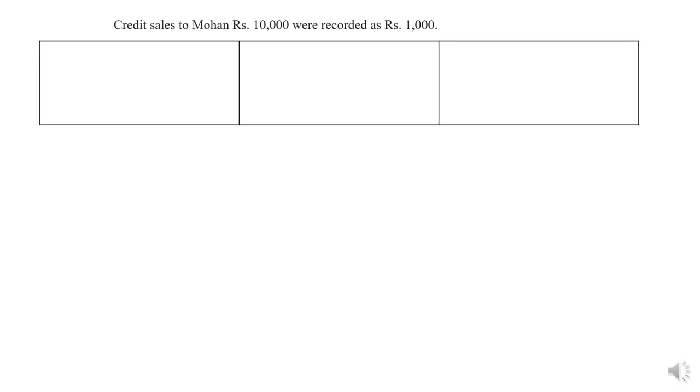I have not taken full problems. Instead, I have divided the problems into single entries so that you will understand better. I have given three columns: in the first column I will write the correct entry, in the second I will write the wrong entry, and in the third we will write the rectifying entry. Now read this question: credit sales to Mohan, 10,000, was recorded as rupees 1,000.